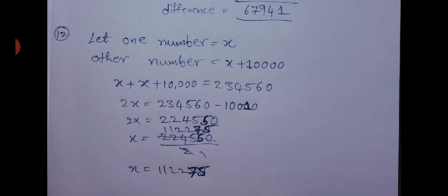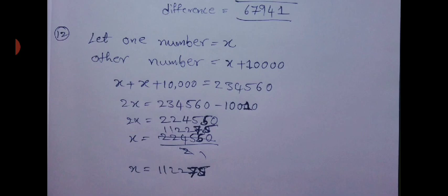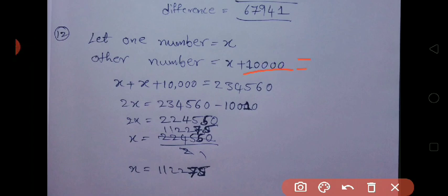Next question: The sum of two numbers is 2,34,560. One number is more than the other by 10,010. Find the greatest number. Let one number be X and the other be X plus 10,010. Note: the difference is ten thousand ten, not ten thousand — please correct that in your notes.